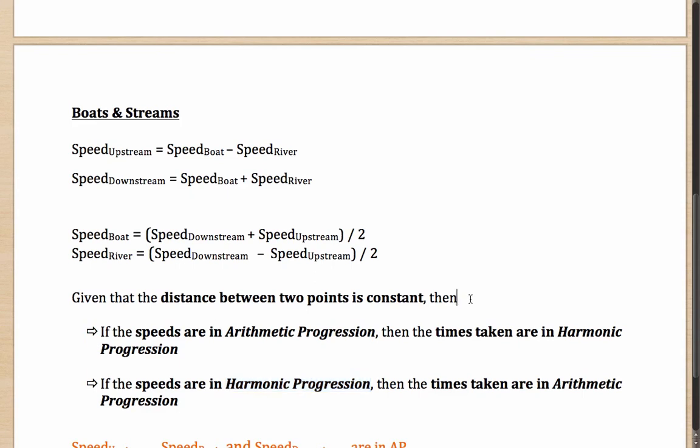Why do you think this happens? Well, for the very simple reason that when distance is constant between two points, then speed and time are inversely proportional to each other. So if speeds are in AP, the time taken will be reciprocal of those values and hence will come out in a harmonic progression.